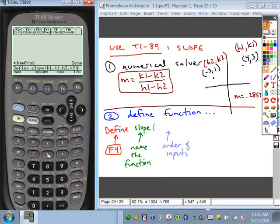What this means is anytime you enter your slope function, you're going to basically type the word slope, parentheses, and then you put the H1 coordinate, followed by the K1 coordinate, followed by the H2 coordinate, followed by the K2 coordinate.